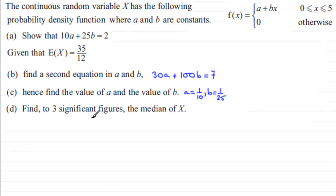So how do we get the median of x? Well, what we would expect is that the probability of our random variable x being less than the median, which I'm going to call m, that probability is going to be equal to a half.